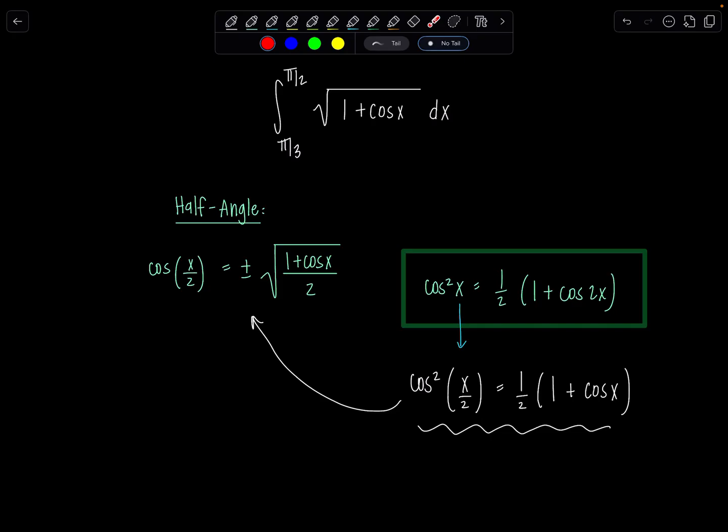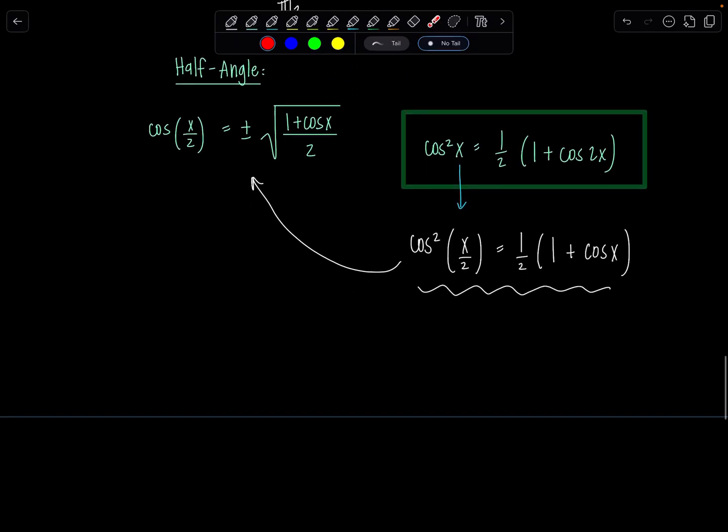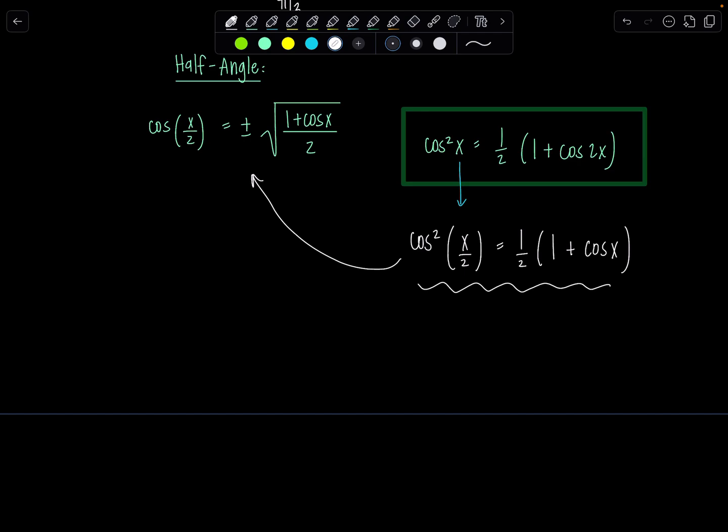So hopefully this is inspiring you. Look at that integral we have going on. It has 1 + cos x underneath the radical. So what that means is I can move that 2 over and say 2cos²(x/2) = 1 + cos x. And that's fabulous.